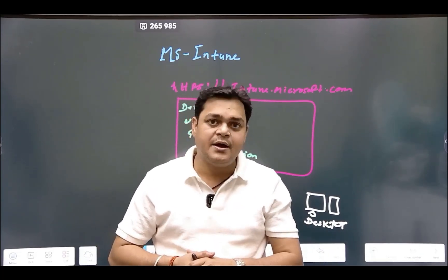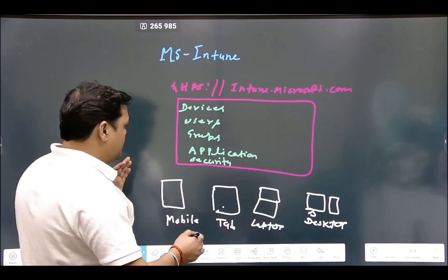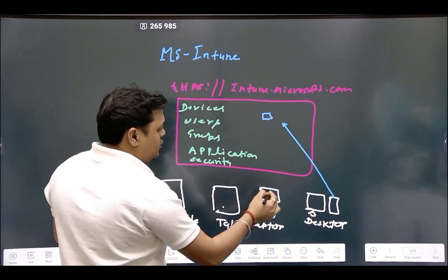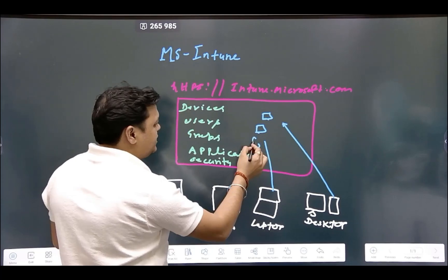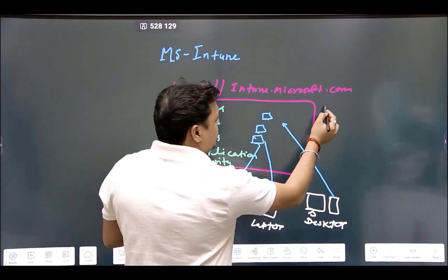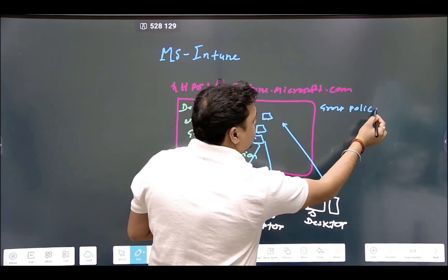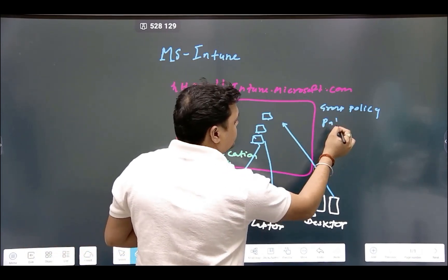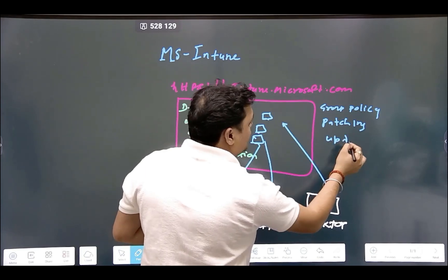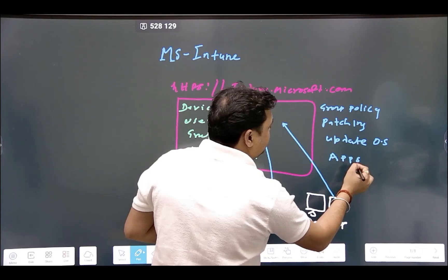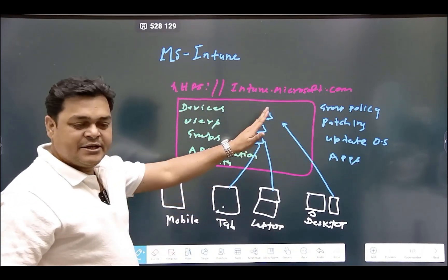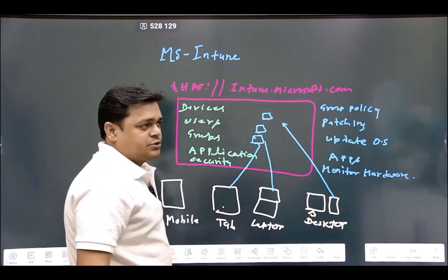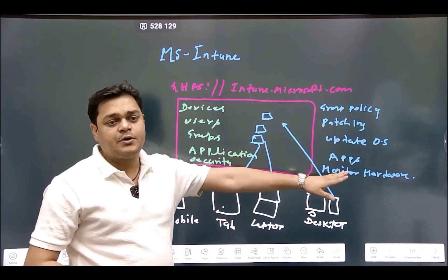As an Intune administrator, you manage and configure all these activities. You can enroll devices into the Intune portal, and from the portal you can apply lots of services — like configuring group policy, installing patches, updating the operating system, managing software applications, and monitoring hardware such as RAM, processor, and storage on your on-premises machines.